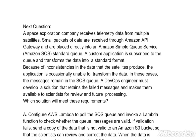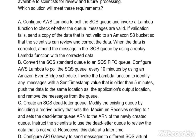A DevOps engineer must develop a solution that retains the failed messages and makes them available to scientists for review and future processing. Which solution will meet these requirements? Option A: Configure AWS Lambda to pull the SQS queue and invoke a Lambda function to check whether the queue messages are valid. If validation fails, send a copy of the invalid data to an Amazon S3 bucket so that scientists can review and correct the data. When the data is corrected, amend the message in the SQS queue using a replay Lambda function. Option B: Convert the SQS standard queue to an SQS FIFO queue. Configure AWS Lambda to pull the SQS queue every 10 minutes using an Amazon EventBridge schedule, invoke the Lambda function to identify any messages with a sent timestamp value older than 5 minutes, and push the data to the application's output location.